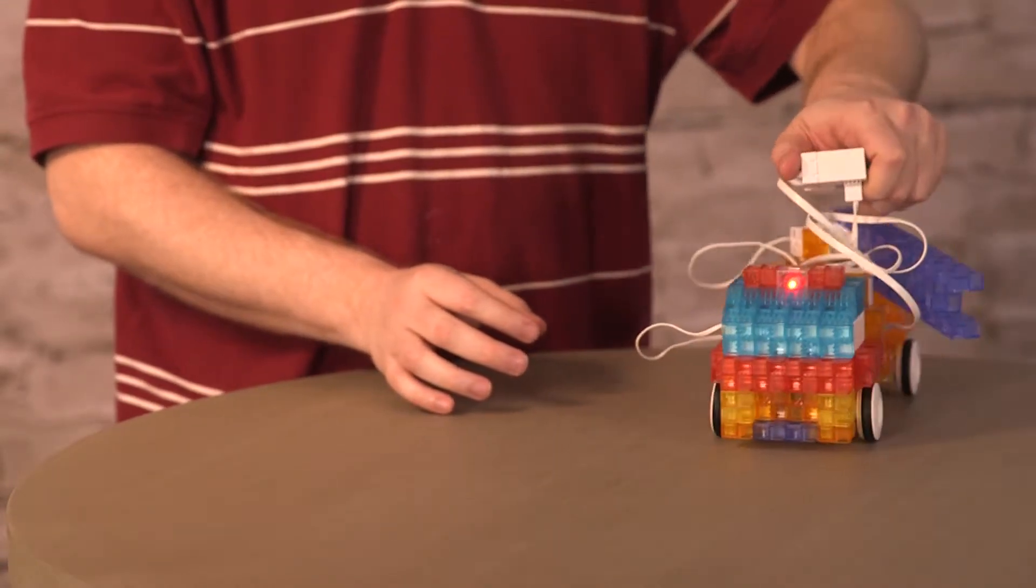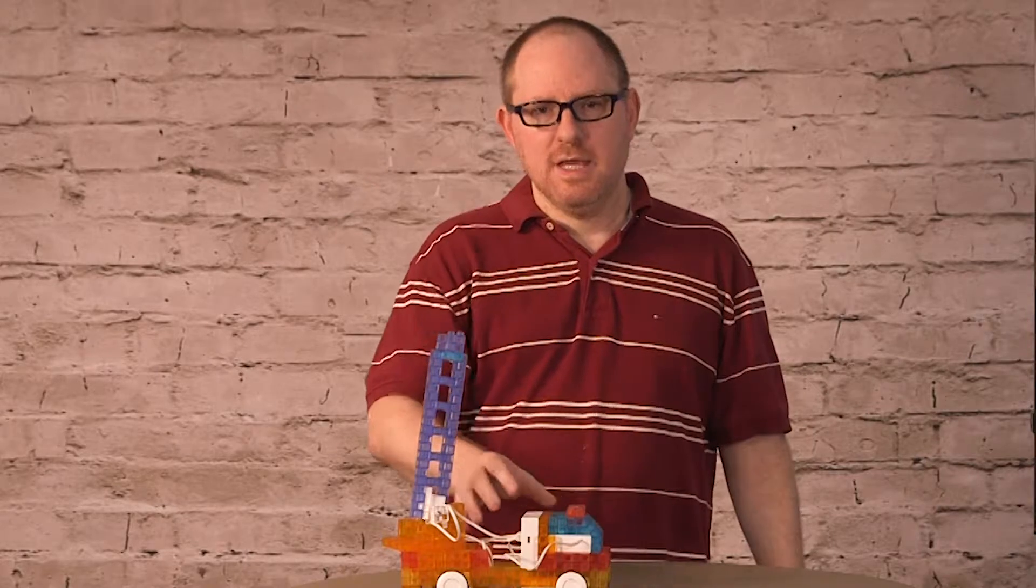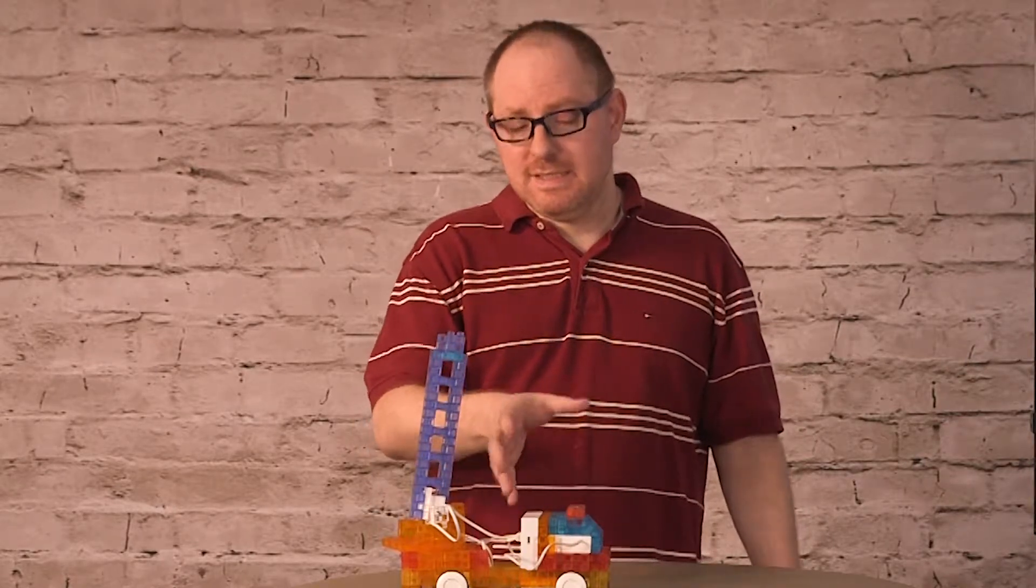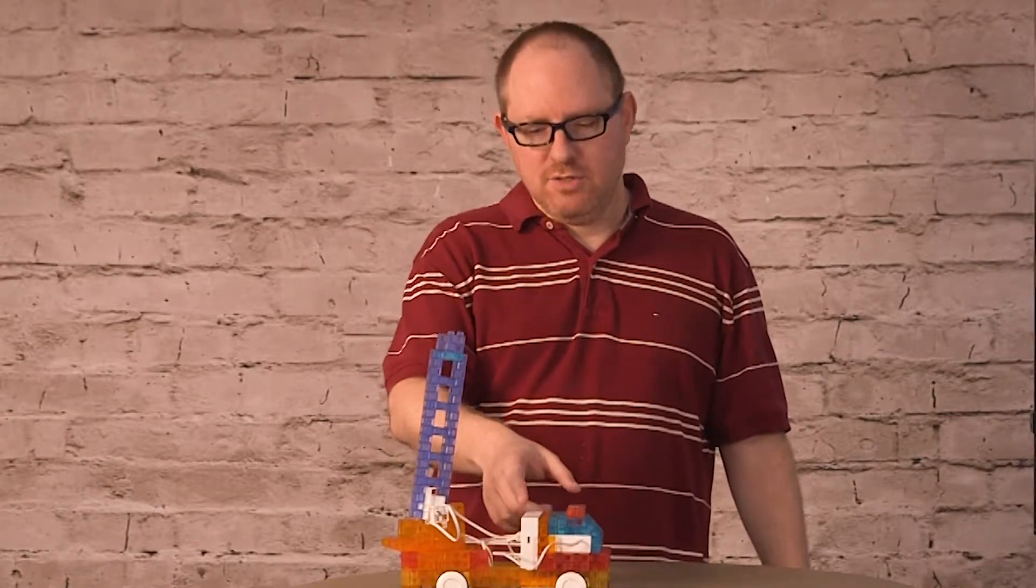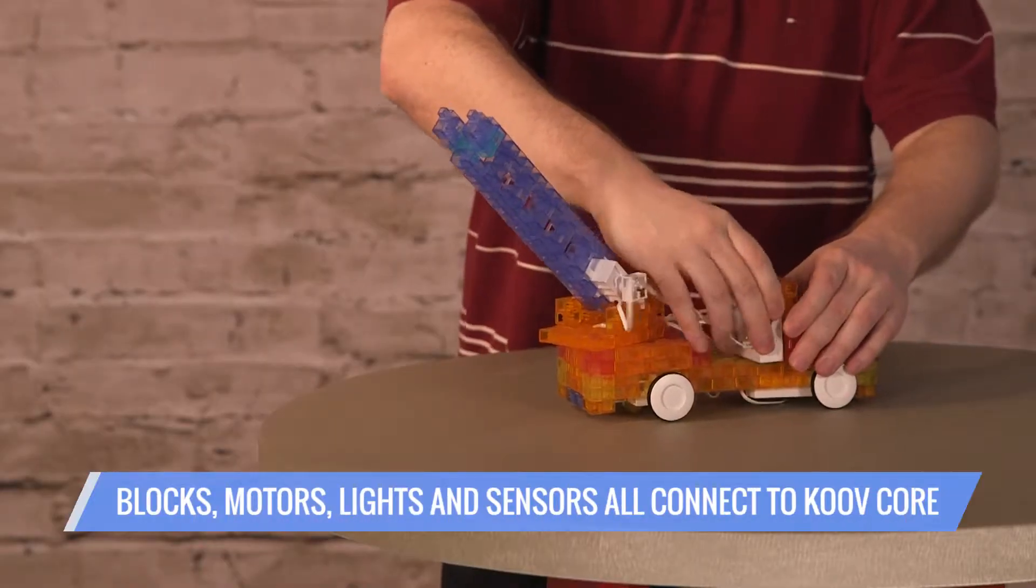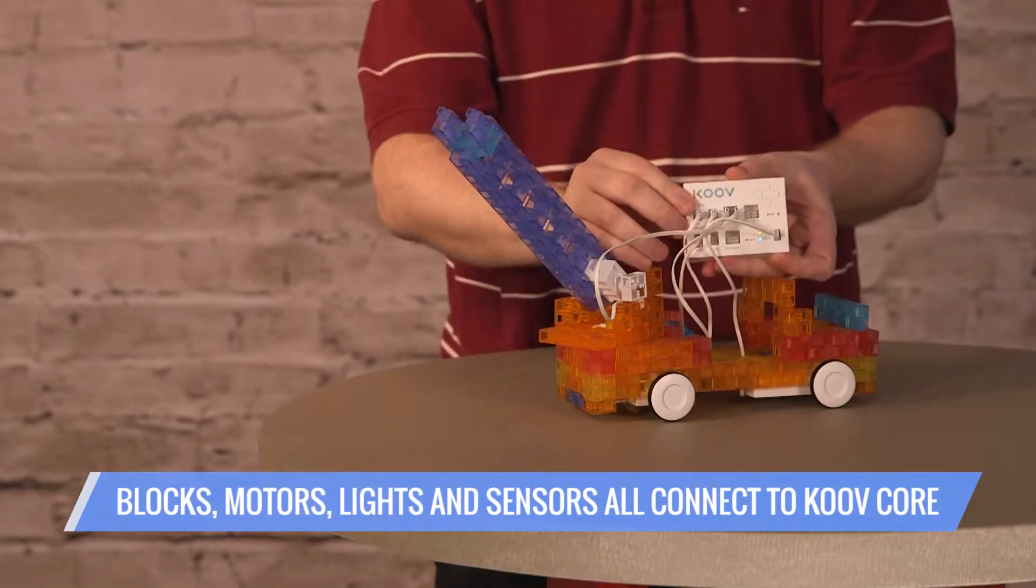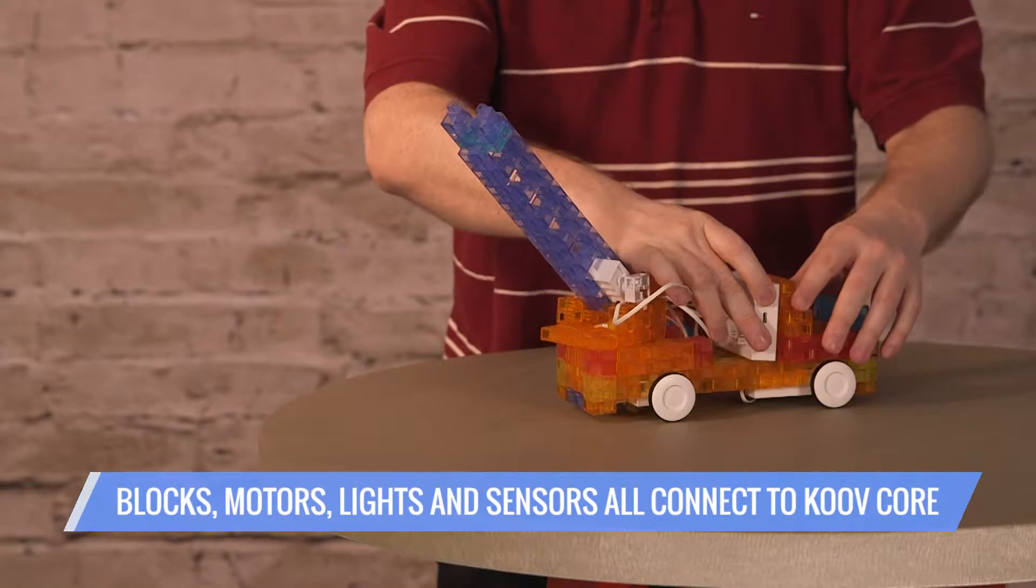You buy the Kouv kit, it comes with a set of blocks, a number of motors, lights, and sensors, and they all connect to the Kouv core, a processing center which actually has an Arduino board inside, just like adult makers use.